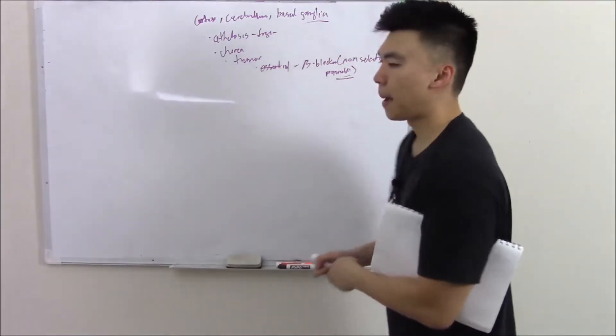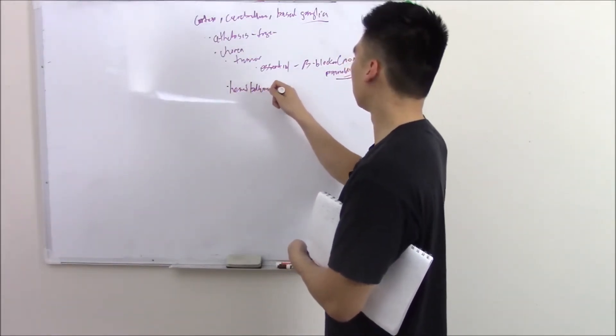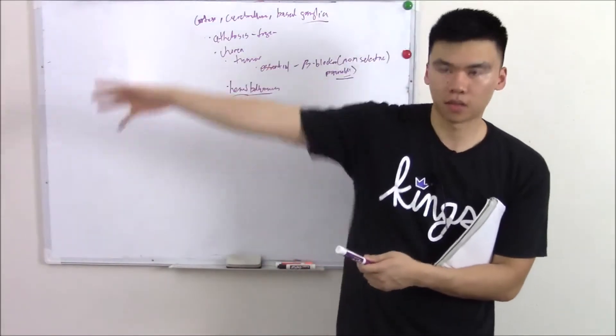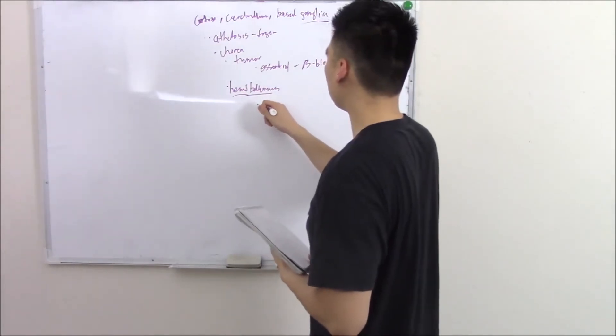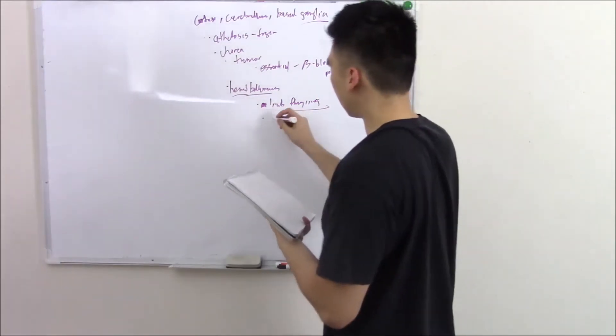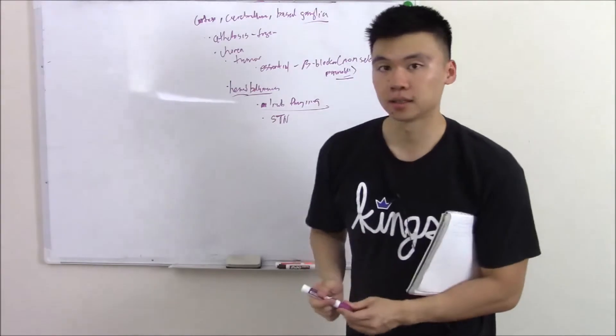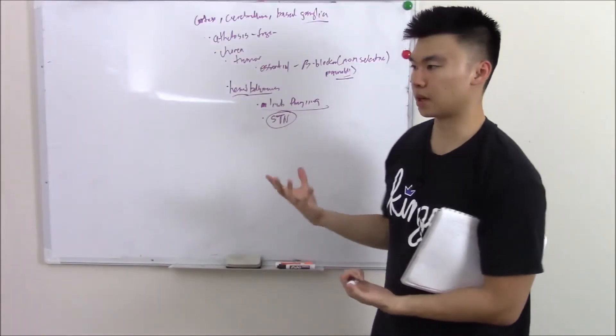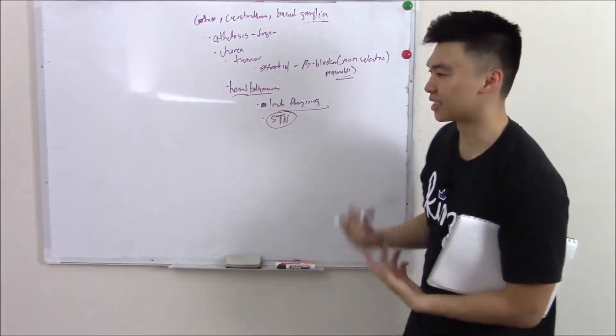You're going to have hemiballismus. Ballismus means to throw, so you have one side just throwing out, limb flinging. It's often associated with damage to your subthalamic nucleus. Recall that's your main excitatory part of your basal ganglia. If you can remember it's the main excitatory part and you can memorize the limb flinging, that's a pretty easy association.